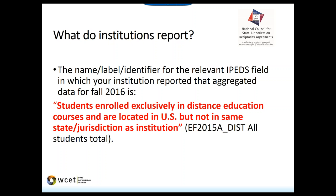When will institutions be able to see the actual form in which the data is input? We've already provided that. Look in the enrollment guide — you'll see a screenshot. It's a list of all states and then a blank space for the number of students to be input. It's exactly the same as last year's. There are three screenshots in the data guide: one of the SARA states, one of the non-SARA states, and a screenshot of the comment box.